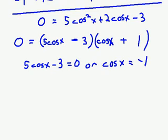This second one is really easy to solve, because negative 1 is one of those special numbers. Between 0 and 360, the angle whose cosine is negative 1 is just 180 degrees.